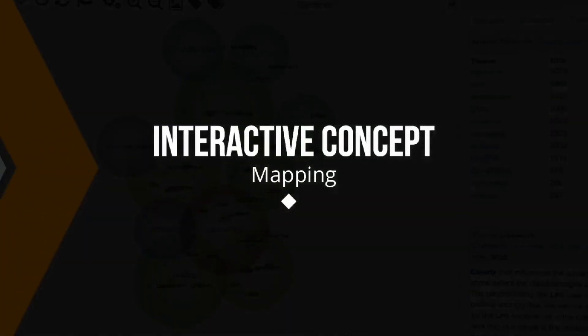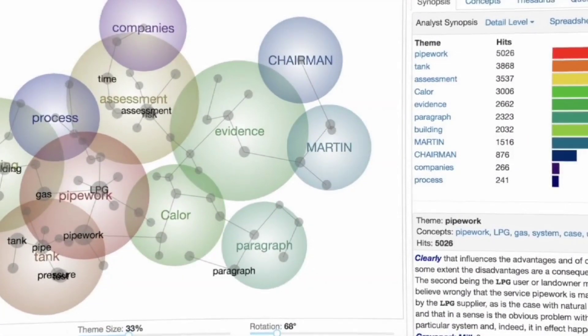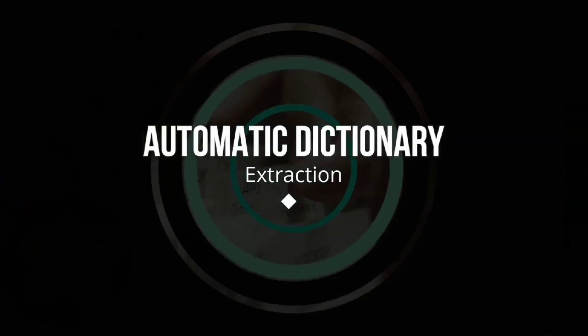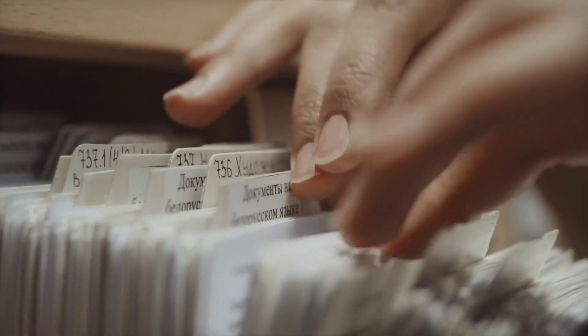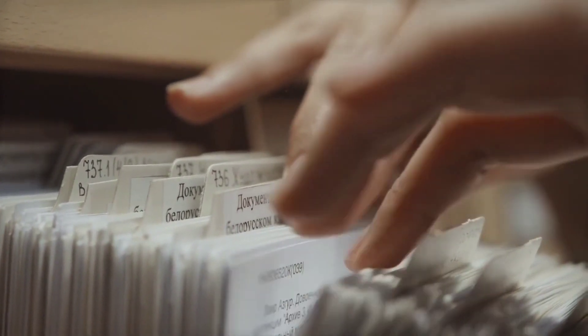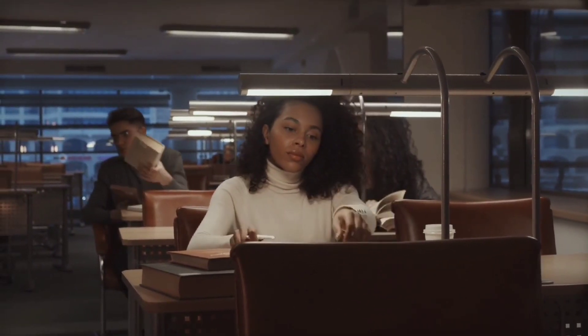Lexi Mansur transforms textual data into an interactive workspace by generating visual concept maps. These maps offer a comprehensive overview of the material, highlighting the main concepts and their connections. Users can explore these maps to gain deeper insights into the data. A standout feature is its ability to autonomously create dictionaries of terms associated with each concept, which enhances accuracy and streamlines the analysis process by relieving users from crafting their own coding schemes.